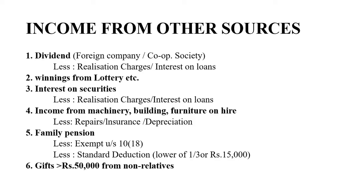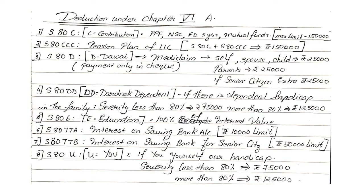After getting income from other sources, we will have to do less deduction under Chapter 6A. All the sections are given. We have made a special video for that where we learned about what are the various deductions available and how you can get those deductions and what items are added under each deduction. Once we have learned the format, the things that come under other sources and the things that come under deduction under Chapter 6A, we can now start with the actual sum.